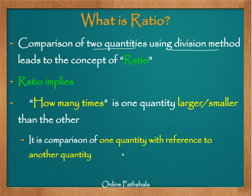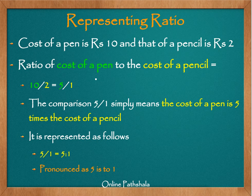We take one quantity as a reference and the other quantity is compared to that reference. That is what a ratio simply is. This idea of comparing one quantity with reference to another quantity becomes clearer when we take an example. Let us say that the cost of a pen is rupees 10 and that of a pencil is rupees 2.